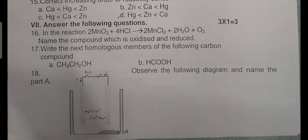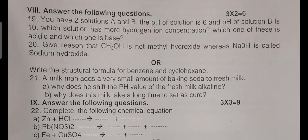Observe the following diagram and name the parts A and B. Two mark questions: You have two solutions A and B. pH of solution A is 6 and pH of solution B is 10. Which solution has more hydrogen ion concentration? Which one is acidic and which one is basic? Give reason why CH3OH is not called methyl hydroxide, whereas NaOH is called sodium hydroxide. Write the structural formula for benzene and cyclohexane.